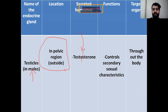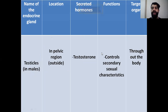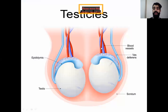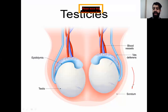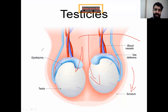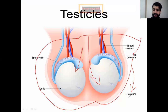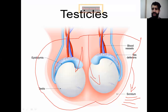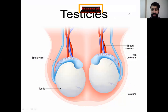An abnormality in the secretion of testosterone will lead to problems in the sexual characteristics of the male. The testicles are found in the pelvic region — suspended outside in a sac-like structure called the scrotum. So the scrotum carries the two testicles outside the pelvic region.